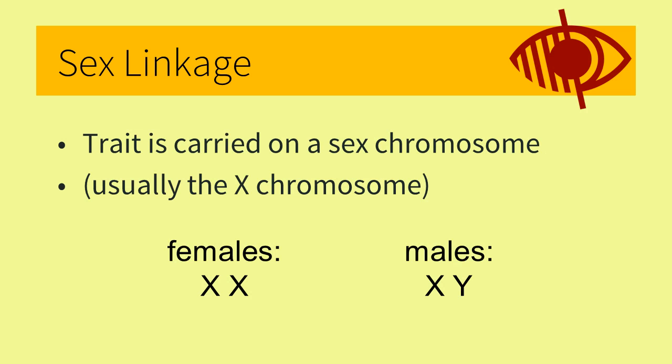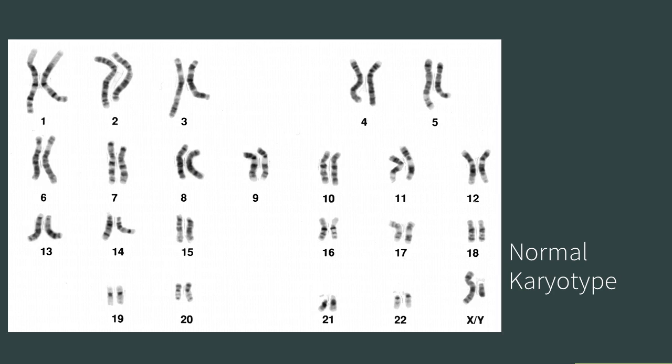A sex-linked trait is carried on a sex chromosome. Recall that females have two X chromosomes, and males have an X and a Y chromosome. Therefore, females will have two alleles for a gene, but males will have only one. As you can see in this human karyotype, the Y chromosome is smaller and does not have as many genes as the X chromosome.